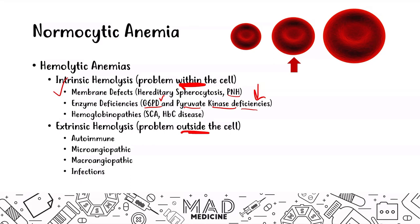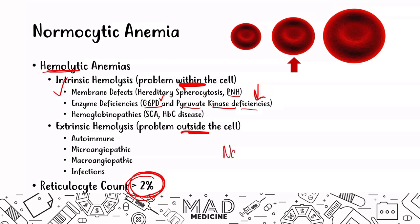Because your red blood cells are being lysed, your bone marrow realizes it needs to increase production, and with that increase in production it will release immature red blood cells more than normal. That leads to a reticulocyte count greater than 2% in hemolytic anemia. Your normal reticulocyte count is 1% to 2%, but in hemolytic anemias you will have greater than 2%. In non-hemolytic normocytic anemias, you will have normal values for the reticulocyte count.